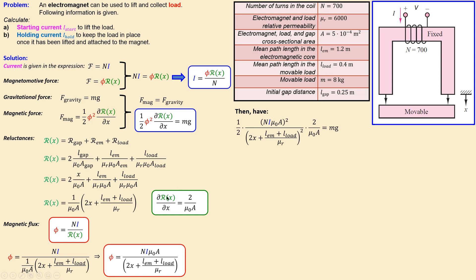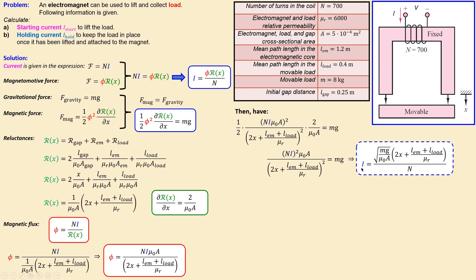Now collecting all the information — substituting the expression for phi squared and the derivative of reluctance into the force balance equation and equating to mg — the factor of one-half and the factor of two cancel, leaving mu zero times A times (N times i)^2 in the numerator. This gives a general expression for the current i as a function of x. Working through several simplification steps, we arrive at the final formula for i, into which the mean path lengths of the core and load, mu_r = 6000, mass, g, mu zero, cross-sectional area A, and number of turns N can all be substituted.